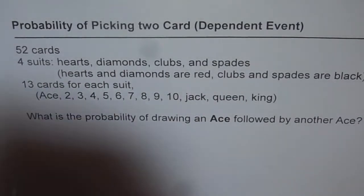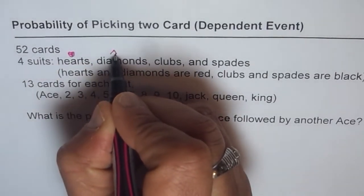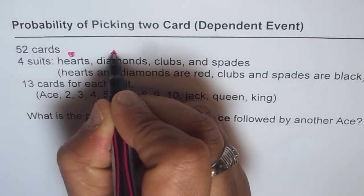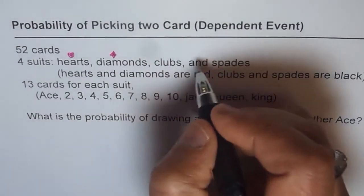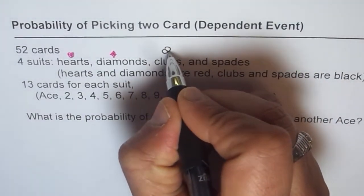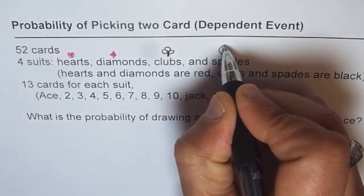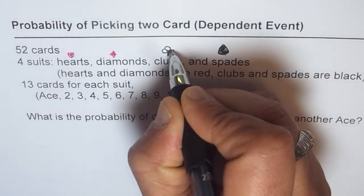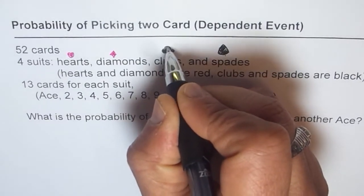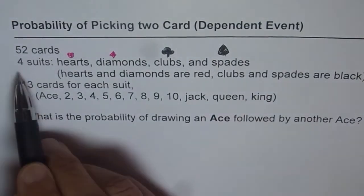Hearts and diamonds are red. So hearts — you see the heart figure in it, and diamonds you will see the diamond on a card. Clubs and spades are black. Clubs will look like this and spades will look like this. Spades and clubs look like a flower. So there are four suits.